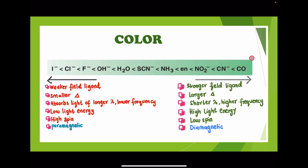Here are the ligands: strong field ligands and weaker field ligands such as halogens. Weaker field ligands have a smaller delta, absorb light of longer wavelength, lower frequency, lower light energy, are high spin, and tend to form paramagnetic complexes. Stronger field ligands have a larger delta, absorb light of shorter wavelength, higher frequency, higher light energy, are low spin, and tend to form diamagnetic complexes.